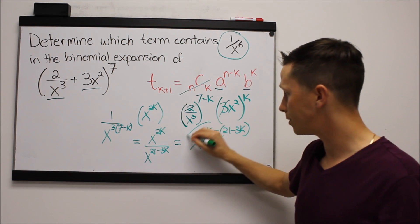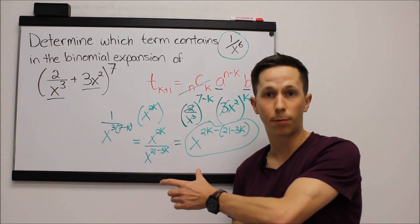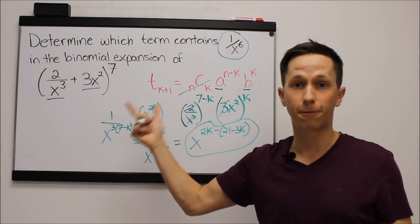So now we've got it down to this is the generic form for the x part of the binomial expansion for each term.